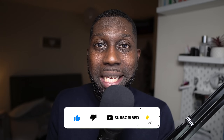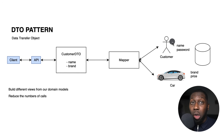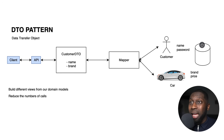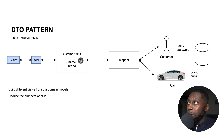Without further ado, let's kick off. DTO stands for Data Transfer Object. The idea is that in your database you might have models such as Customer, which has name and password, and Car, which has brand, price, and other fields. These entities are stored in a database. The idea of the DTO pattern is that you have a mapper which is responsible for performing data transformation from one data type to another. If you want to send customer information to the client that consumes the API, it's not feasible to send the password.